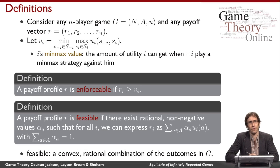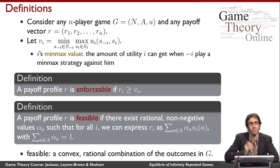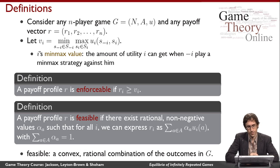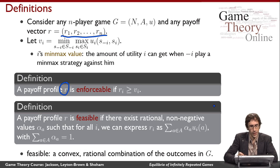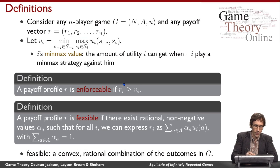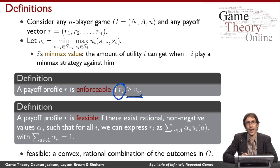So intuitively, if I want to punish you as much as possible in a game and you know I'm trying to punish you, the amount of utility you get is your min-max value. I will say that a payoff profile is enforceable if it's the case that everybody's payoff in that profile is at least their min-max value. If anybody is getting less than their min-max value in a given payoff profile, I will say that is an un-enforceable payoff profile.